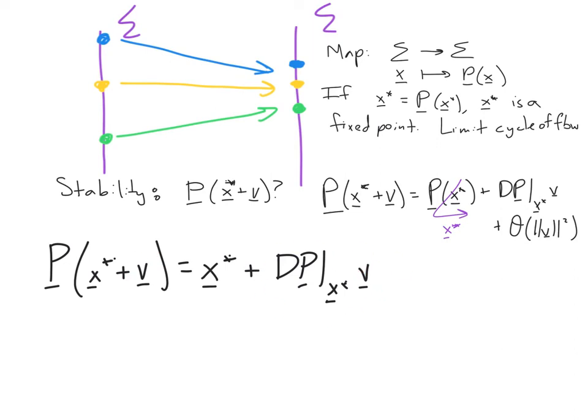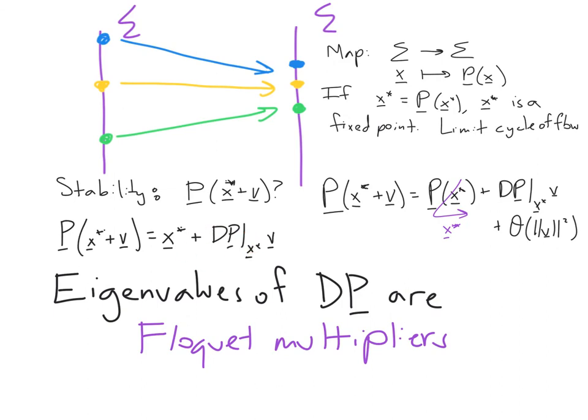And so we really care about the size of this object relative to the size of V because we care whether it is growing in size or decaying in size. To think about whether this object is growing or decaying, we actually just need the eigenvalues of this derivative matrix.